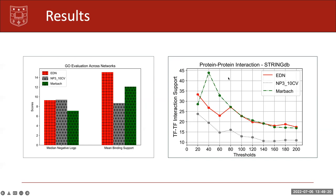On the right is PPI interaction from STRING DB, and we check for protein-protein interaction support for top 200 TF-TF interactions in each network, where interactions are scored using Jaccard similarity index for each TF-TF pair based on their target gene set. We find that MARBACH performs better than EDN and NP 310CV for top 60 interactions, but EDN performs better or similarly to MARBACH as we look at more interactions.